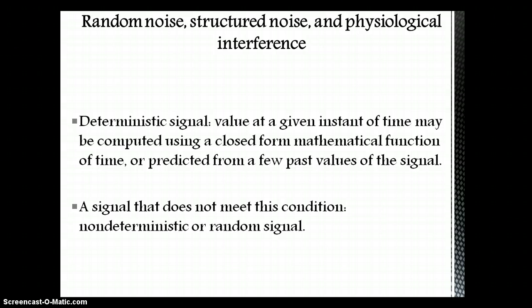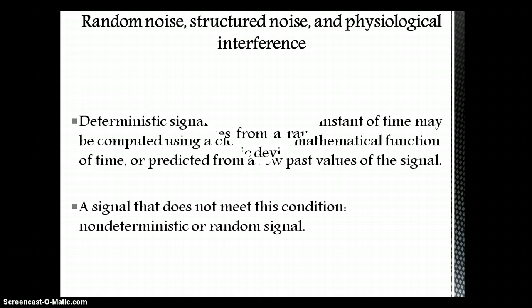Before studying random noise, we will see what a deterministic signal is. A deterministic signal is a signal which has a definite structure, definite shape, and even a definite size. So it can be easily represented using a mathematical function of time, and it can be easily predicted using past values of the signal. A signal which cannot be represented using a mathematical function is called a non-deterministic signal or random signal.